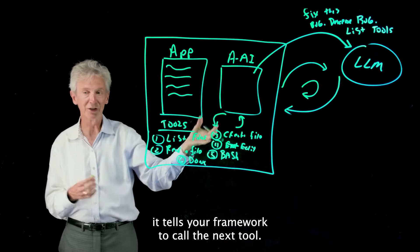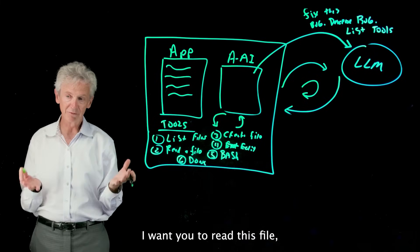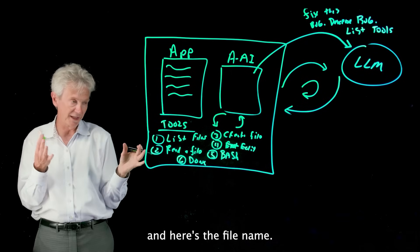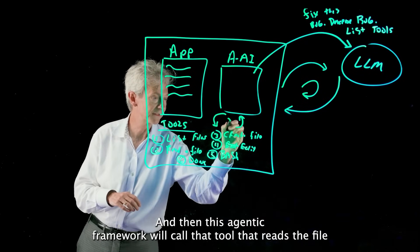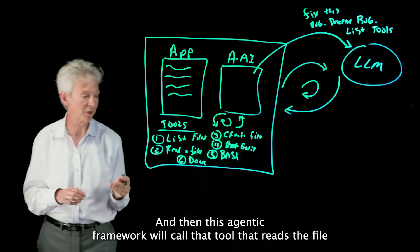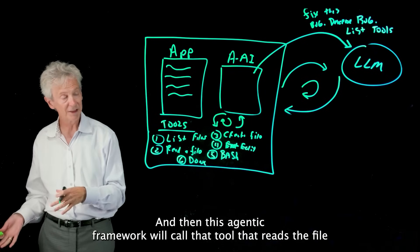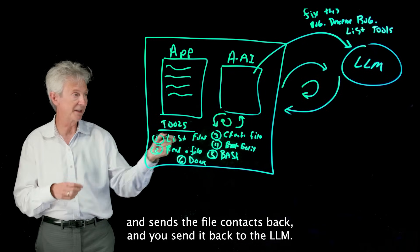So this is just a continuous loop and it tells your framework to call the next tool: I want you to read this file and here's the file name. And then this agentic framework will call that tool that reads the file and sends the file contents back and you send it back to the LLM.